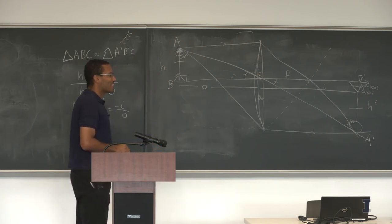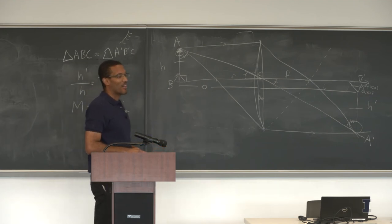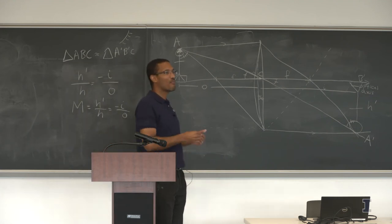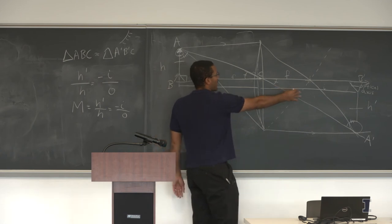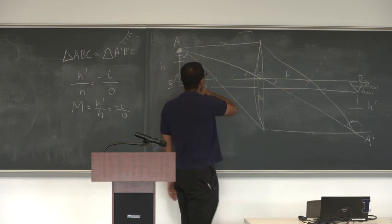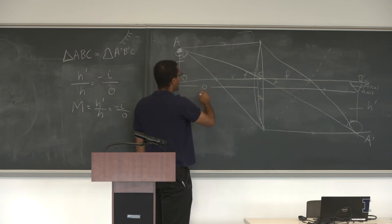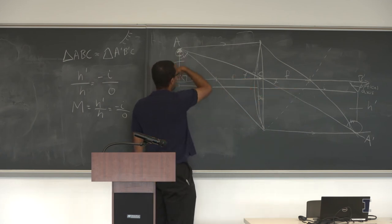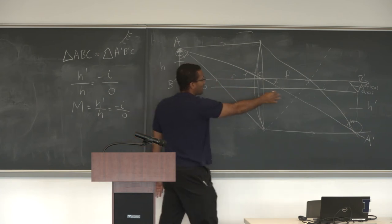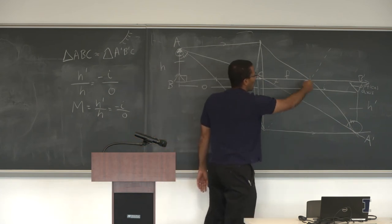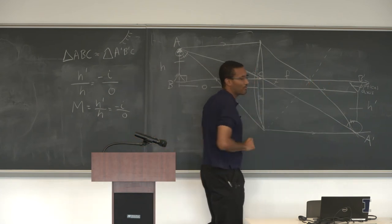The second step is figuring out how far away the image forms if you know the object distance O. I have my lens and my object at a certain distance from the lens — how do I calculate where the image will form?